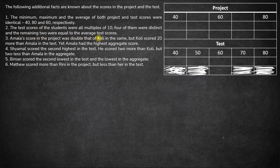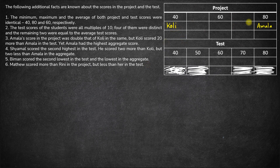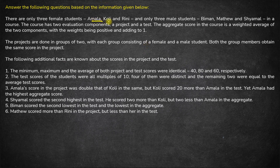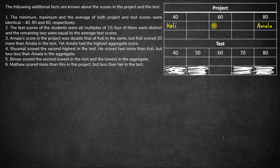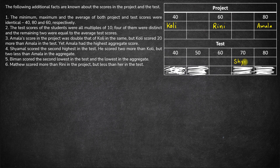Amla's score in the project was double that of Kohli. So Amla must have obtained 80 marks and Kohli must have obtained 40 marks in the project. Since there are three females — Amla, Kohli and Rini — the third female Rini will definitely get 60 marks in the project. Next, Amla had the highest aggregate score. Shyamal scored the second highest in the test; the second highest score is 70, so that must be Shyamal.